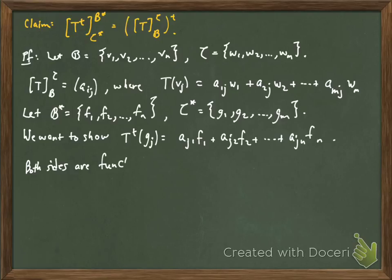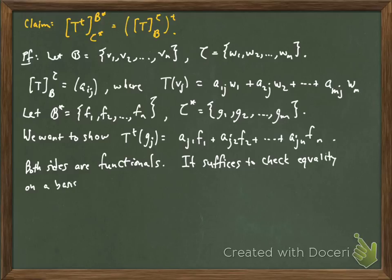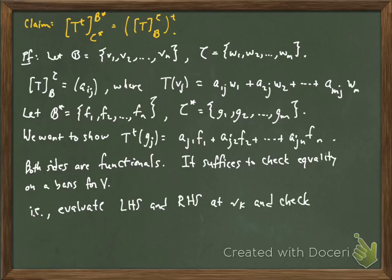Now, both sides of this equation that I wrote down are functionals. And so to show equality, we're just going to evaluate them at points. And since they're both linear, it's enough to check equality on a basis for V. So what does that mean? I'm going to evaluate the left-hand side and the right-hand side of this equation at Vk, check for equality, and I'm going to do this for each k, k equals 1, 2, 3 up to n.